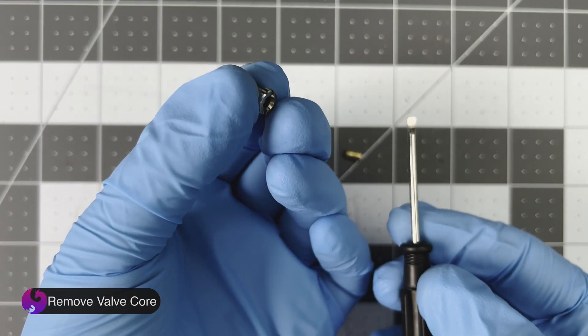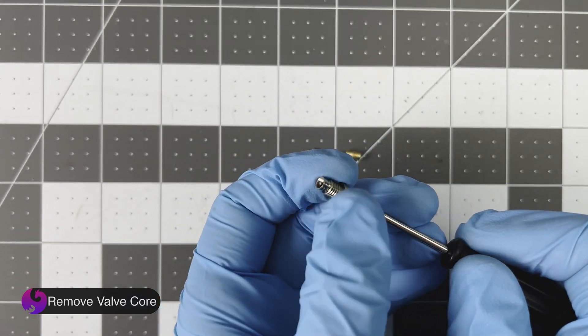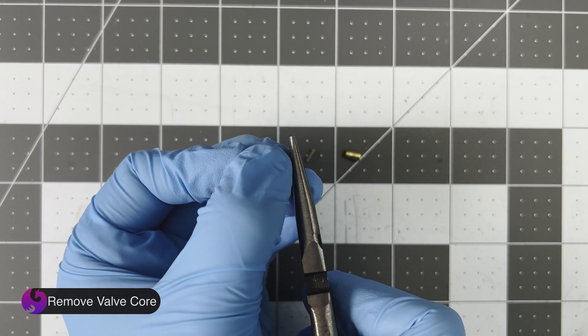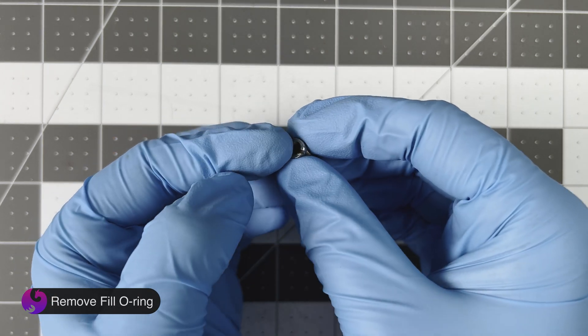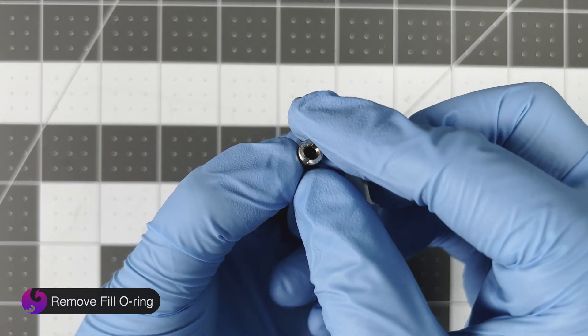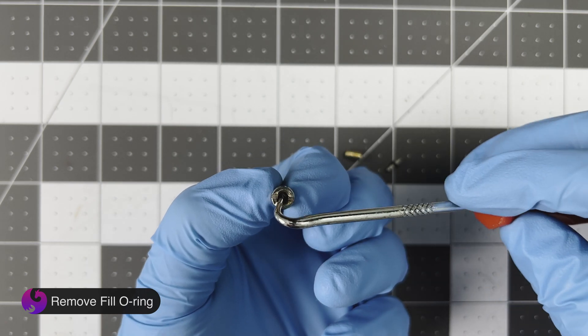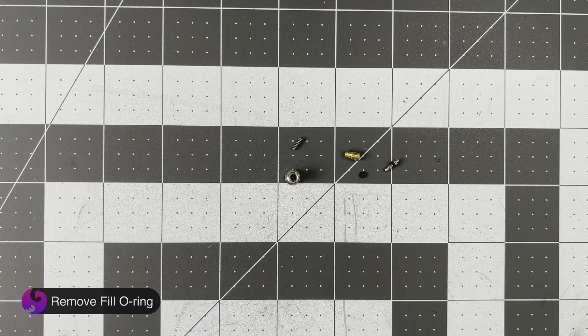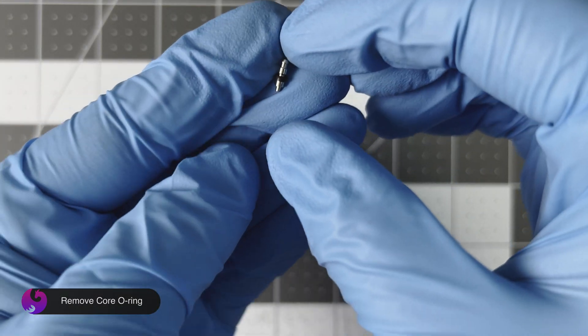Once we set everything down on the table, we're going to take a small pick or a screwdriver and push the internal valve core out. Sometimes it can be tricky and it might take a good bit of force. Once that is out, we're just going to pull out the O-ring in the top. Then we're going to pull off the O-ring on the valve core.